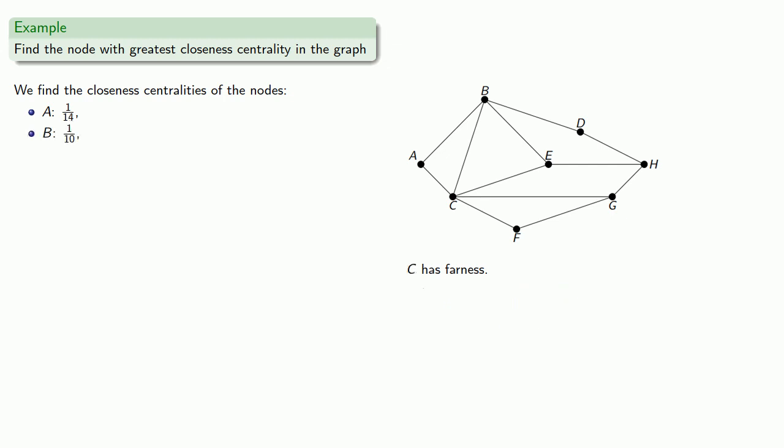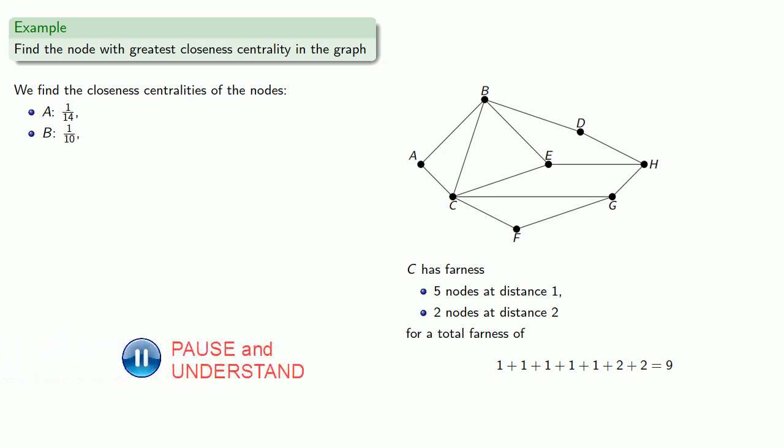If we look at node C, there's 1, 2, 3, 4, 5 nodes at distance 1. And there's two more nodes at distance 2. So our total farness, 5 ones plus 2 twos. And so our closeness centrality is 1/9.